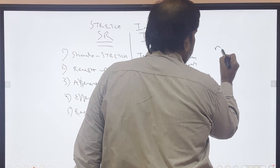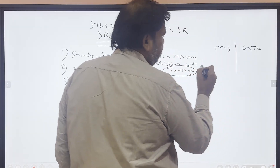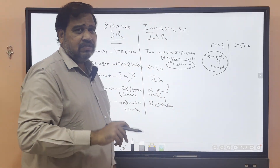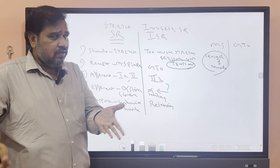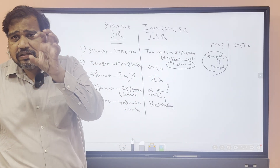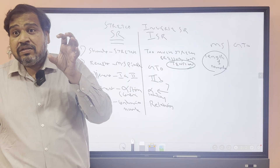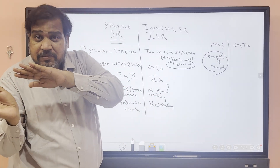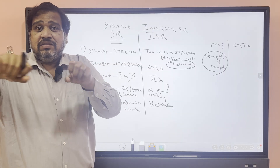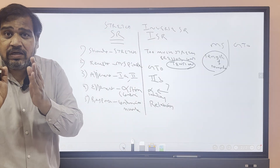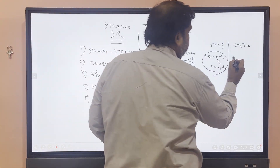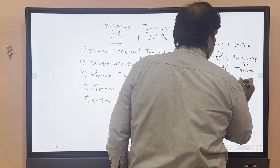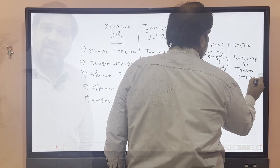Muscle spindle mainly responds to change in length of the muscle. Whenever there is stretch, the muscle spindle senses the stretch of the intrafusal fiber and acts. Muscle spindle is responsive to length or change in length, and sometimes velocity of change. Golgi tendon organ, on the other hand, detects the change in tension, pressure, or force of the muscle.